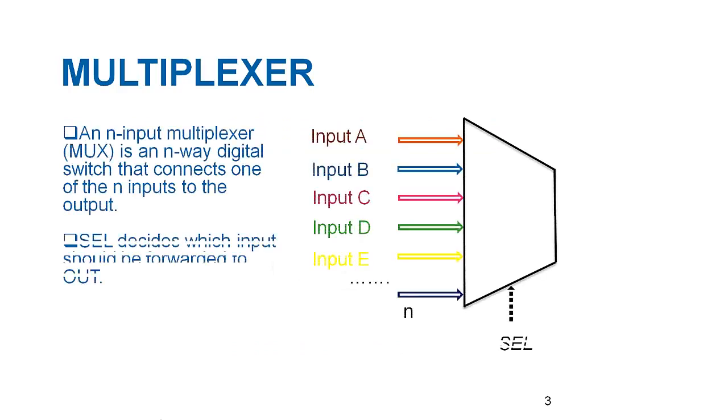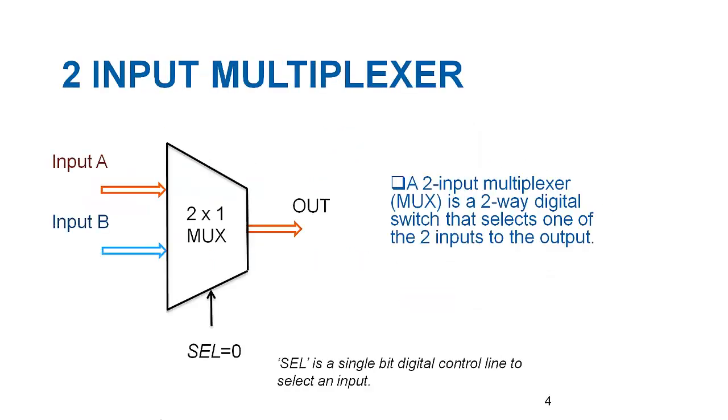It usually has a number of inputs, a single output line and a control line, where control line is responsible for selection of an input. Now let us move to a two input digital multiplexer in which digital value of control line SEL determines who should connect to the output.